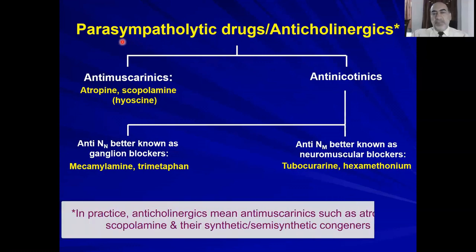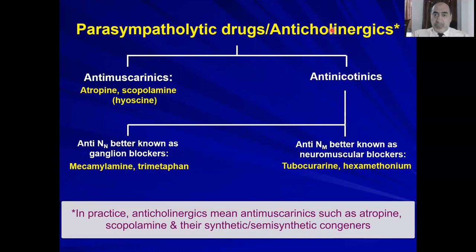Classification: parasympatholytic drugs — anticholinergics or antimuscarinics — are subclassified first into antinicotinics and antimuscarinics, because cholinergic receptors include both nicotinic and muscarinic receptors. Antimuscarinic examples include atropine and scopolamine, also known as hyoscine. Hyoscine is the same as scopolamine, not hyoscyamine.